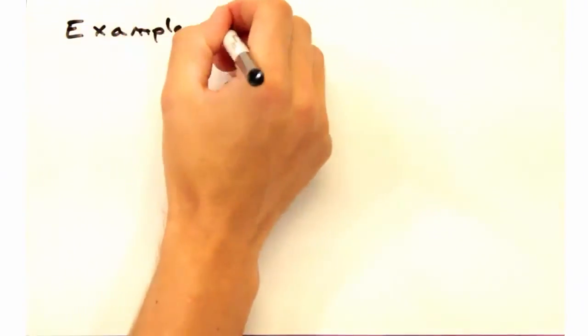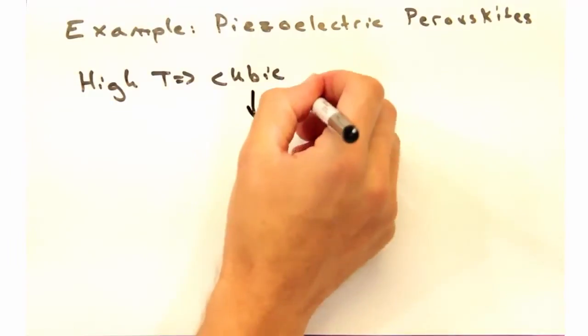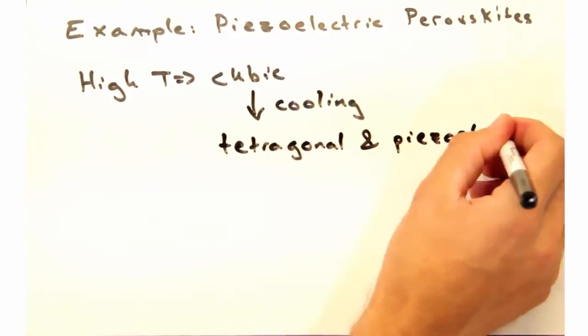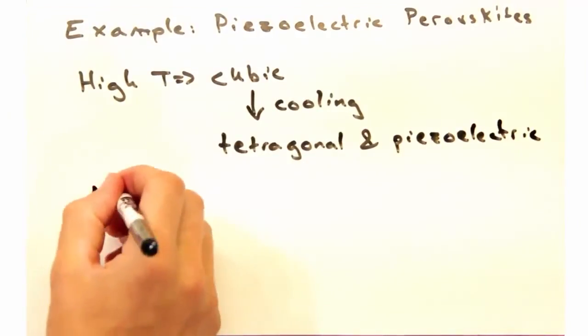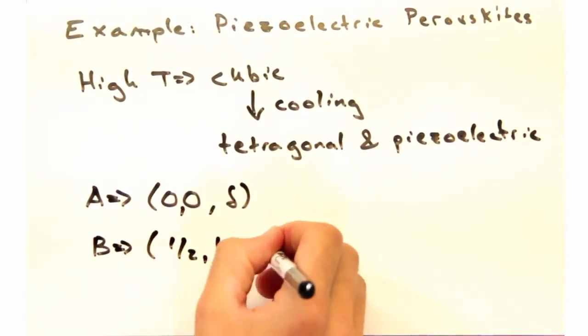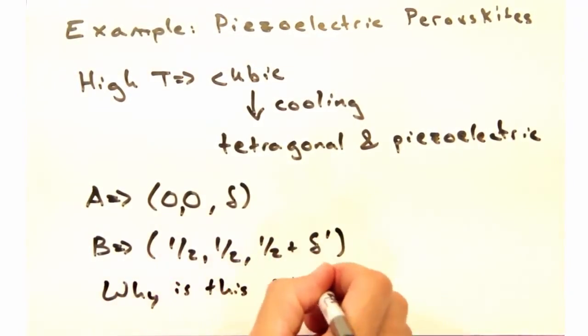So let's wrap this up with an example for you to try on your own. The first example brings us back to the perovskites. Some perovskites are tetragonal instead of cubic with a long A3 axis and exhibit piezoelectricity. When piezoelectric, the A and B cations are displaced along the A3 axis by delta and delta prime.